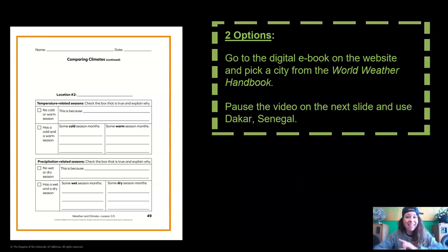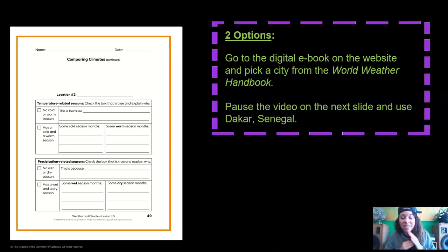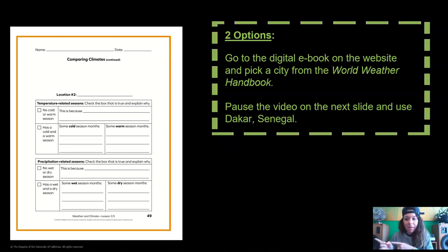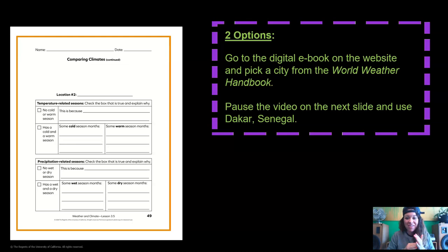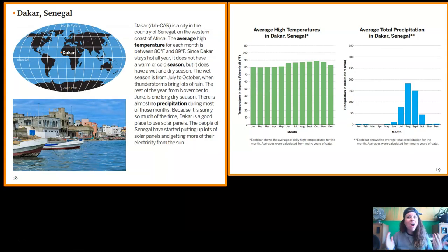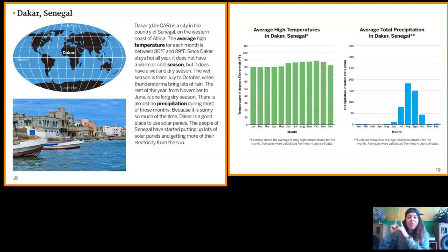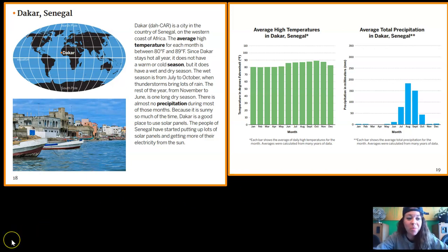Now we're going to move on to page 49 — it's the exact same thing as page 48, just a different city. You have two options: you can pause the video, go to the digital ebook on the website, and pick any city from the World Weather Handbook to fill out page 49. Or if you don't have access to the World Weather Handbook, stay tuned and we'll do Dakar, Senegal together. Make your choice now and pause the video. If you're staying here to do Dakar, Senegal — here we go. I'll leave the text and graphs on screen, but I want you to do this one on your own. Pause the video now and complete Dakar, Senegal on page 49.